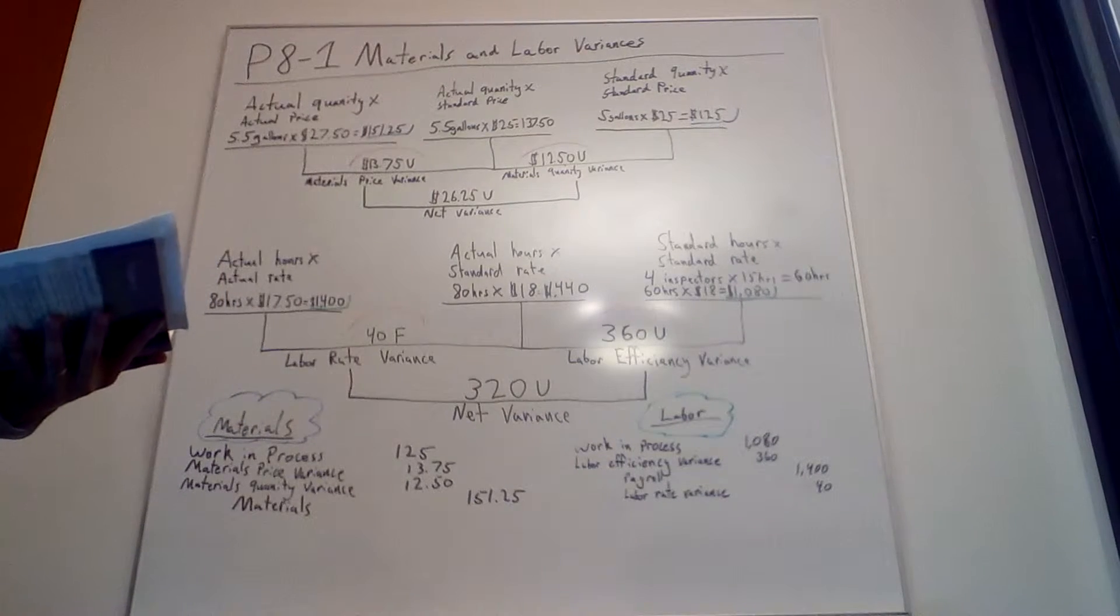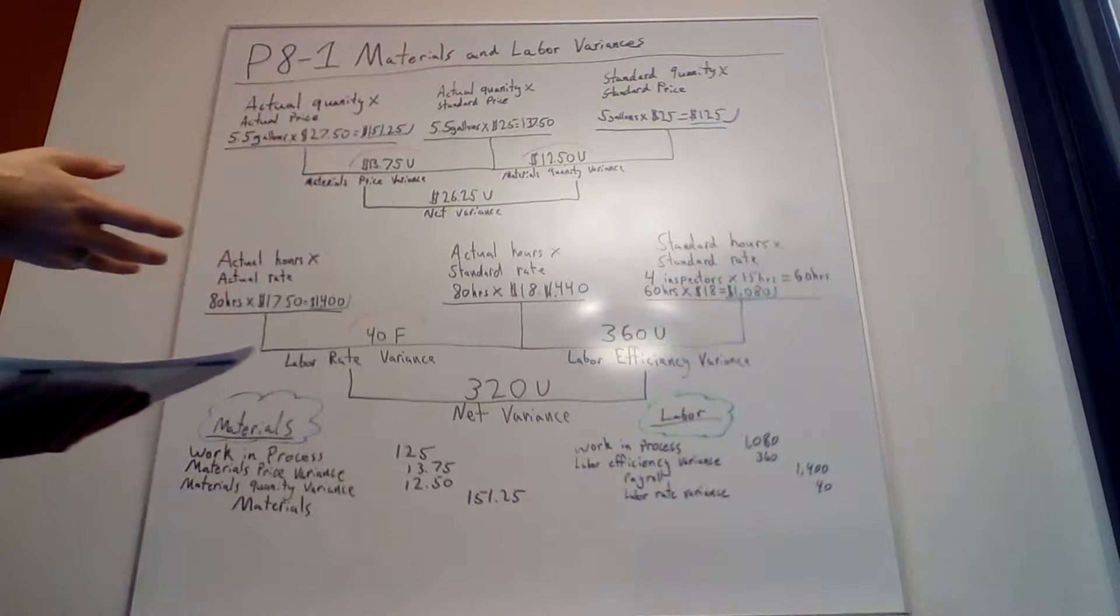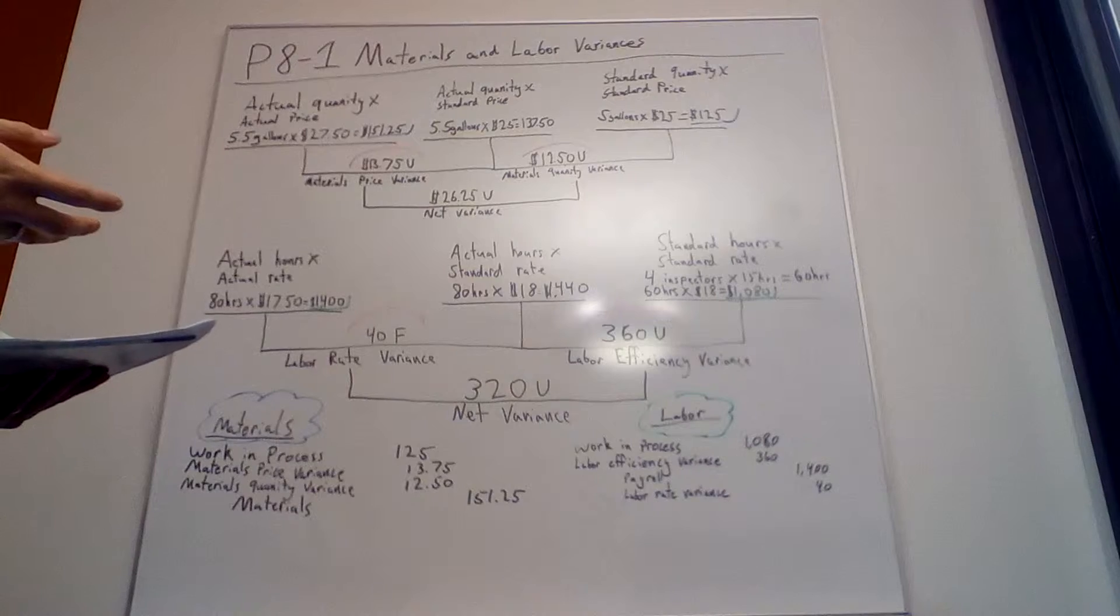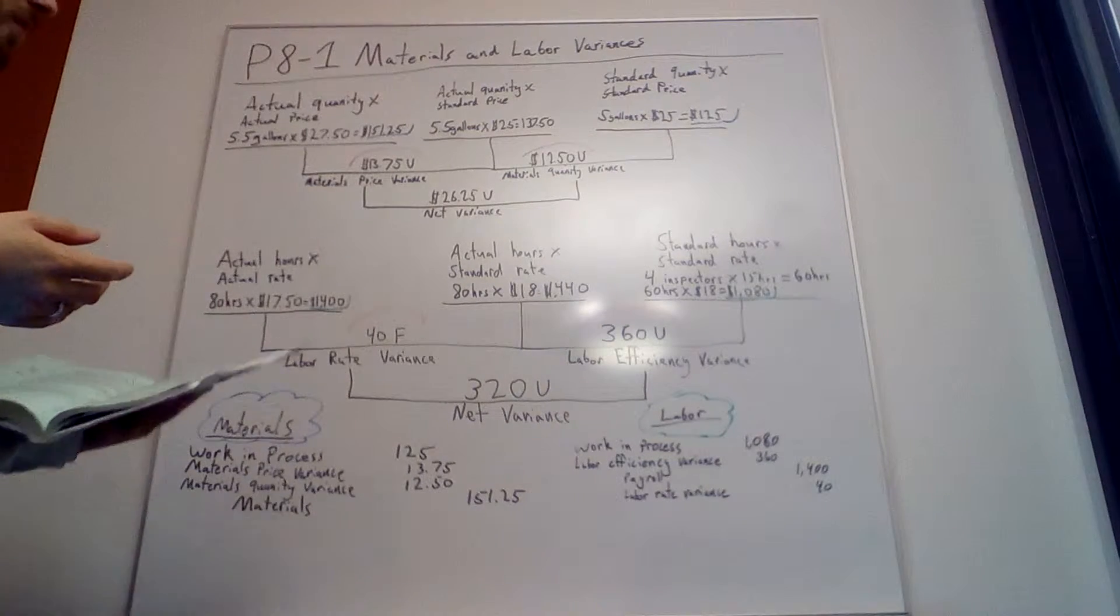This is a very good problem for this chapter because it explains and shows how you need to track each variance. There are ones for materials and ones for labor.